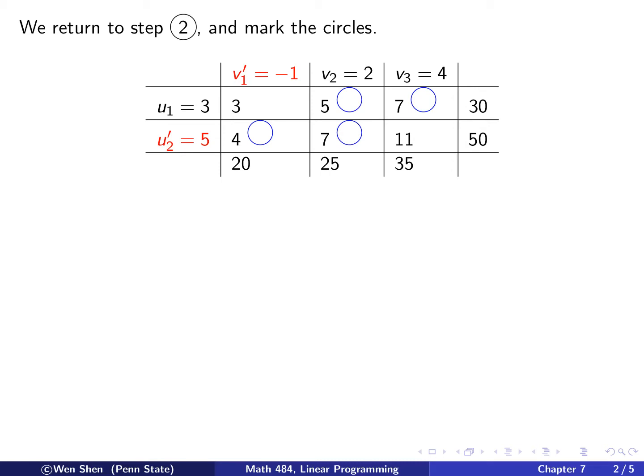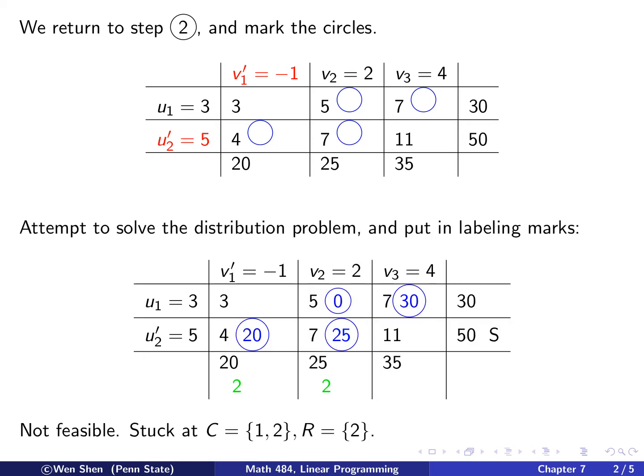Now let's mark the links. For here, I have 3 minus 1 is 2, is less than 3, so not linked. 3 plus 2 is 5, linked. 3 plus 4 is 7, linked, put a circle. 5 minus 1 is 4, linked. 5 plus 2 is 7, linked. 5 plus 4 is 9, less than 11, not linked. So we have these 4 links.